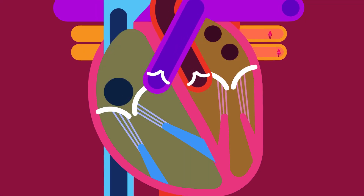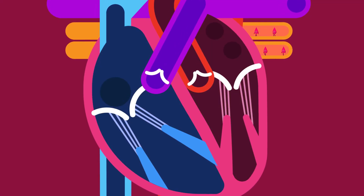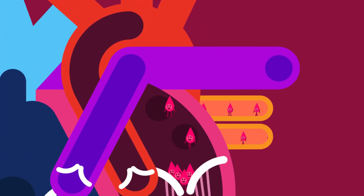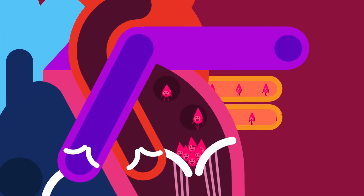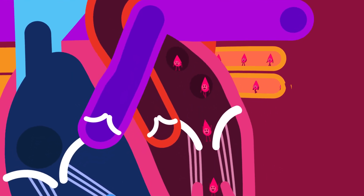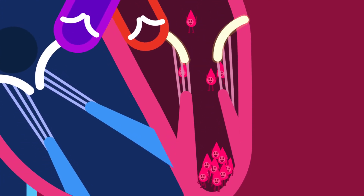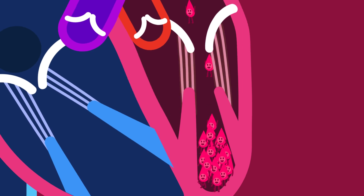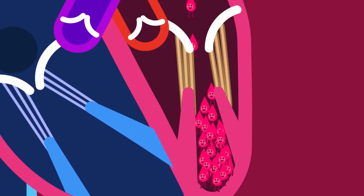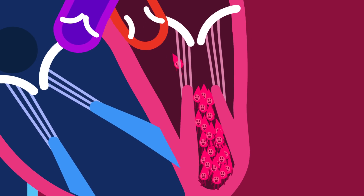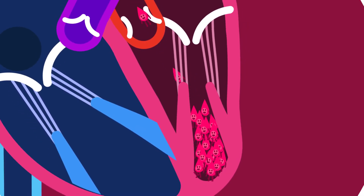Each side has an atrium and a ventricle. The left atrium receives oxygenated blood from the lungs via the pulmonary vein and pumps blood to the left ventricle. The mitral valve prevents backflow of blood to the left atrium. The chordae tendinae are tendons that tighten to prevent valves from flapping backwards.